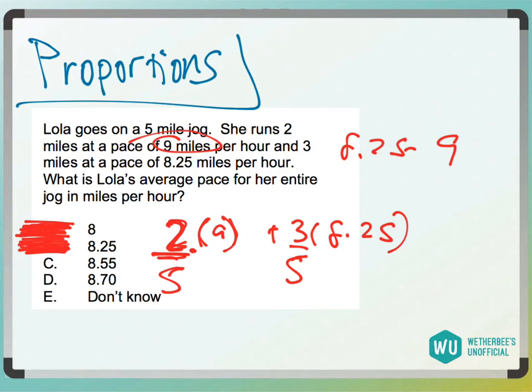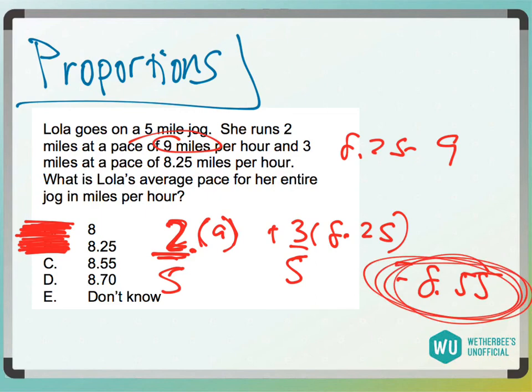So now when we multiply these out, if you put this in your calculator, 2 fifths times 9, 3 fifths times 8.25, it's going to tell you that it's 8.55. So that would be answer choice C.